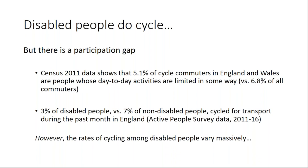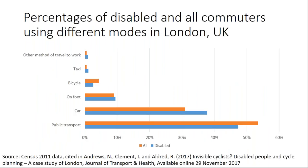One thing that's quite interesting is that rates of cycling among disabled people really vary. What's most important is how people travel in a particular local area. In London, public transport is dominant, followed by the car, then walking, and cycling is still fairly marginal for people generally and for disabled people specifically — around 3% versus 5% cycling to work. By contrast, in Cambridge, which has the highest cycling rates in the UK, 32–33% of all commuters get to work by bike. For disabled people it's lower, but still 26%. So one in four disabled commuters in Cambridge are cycling to work — much higher than the figure for London.